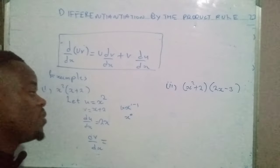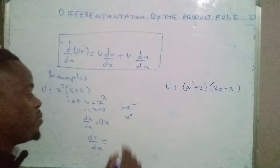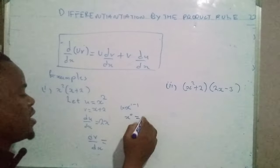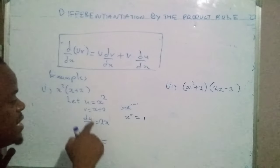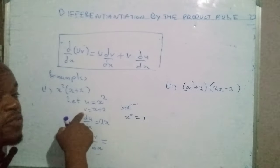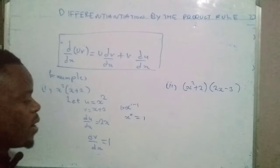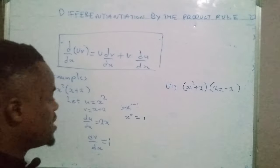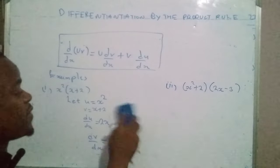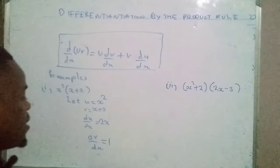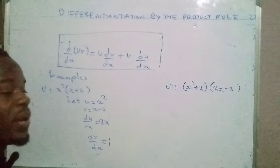According to the laws of indices, any number raised to the power zero is equal to one. So the derivative of the function v is actually one.